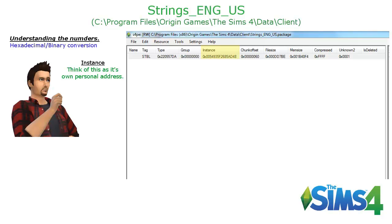If I want to change numbers in the game, I usually will change the instance. Think of the instance hexadecimal number more like a personal address for that file. Every file within The Sims 4 has its own personal address — nobody's personal address is the same for that particular tag or type. No tag or type file can have the same instance number, or there will be collisions within the game. You can change this number to pretty much whatever you want, as long as it's not being used by another file.